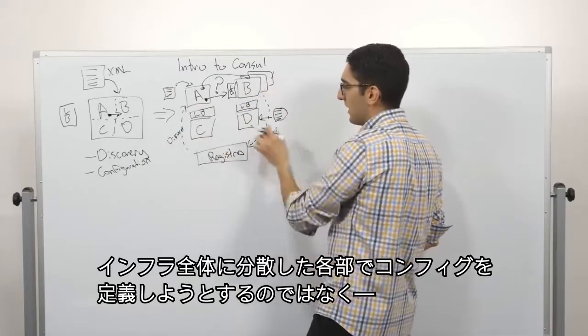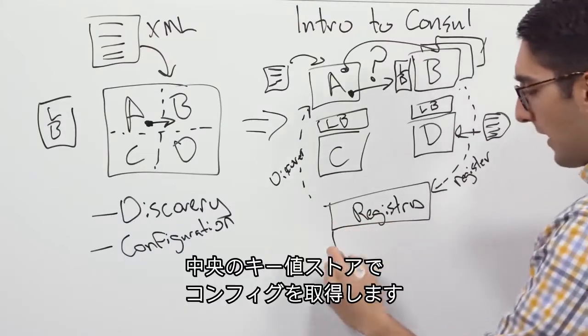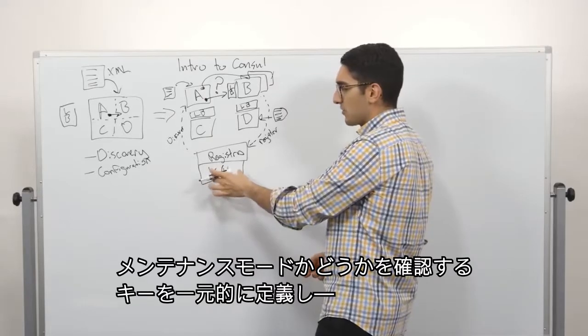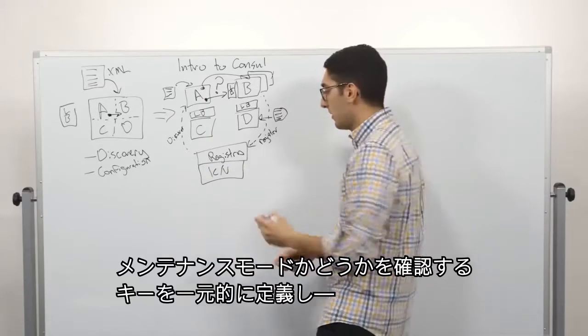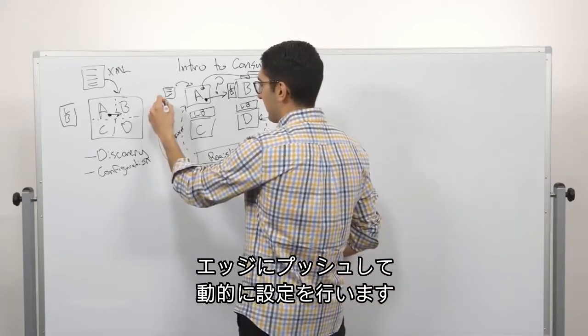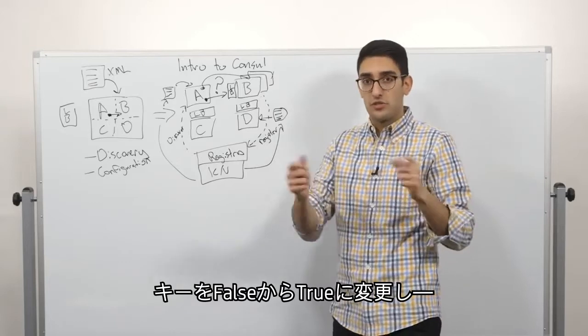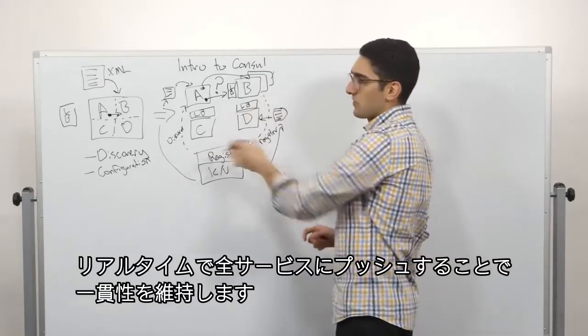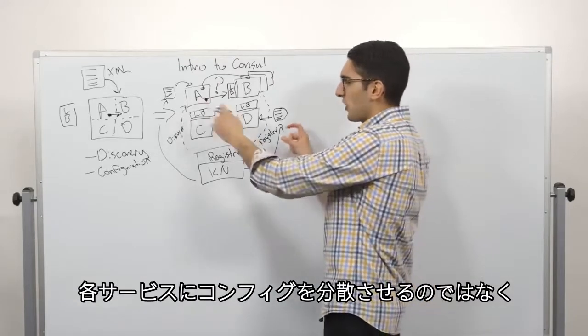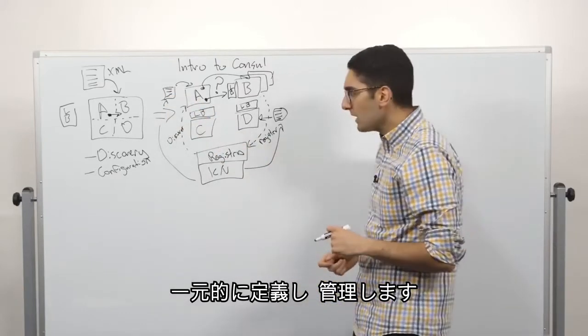And so the way Consul thinks about this problem is, instead of trying to define the configuration in many individual pieces distributed throughout our infrastructure, how do we capture it in a central key-value store? So we define a key centrally that says, are we in maintenance mode? And then we use it to push it out to the edge and configure these things dynamically. So now we can change a key centrally from, are we in maintenance mode, false to true? And then push that out in real time to all of our services, giving them a consistent view. So moving away from having the sharded distributed configuration everywhere to defining it and managing it centrally.